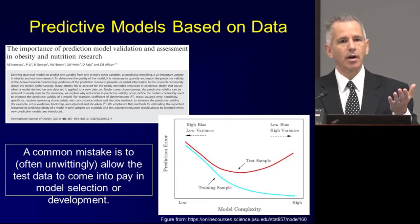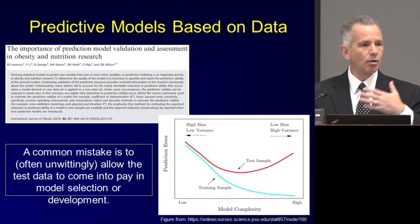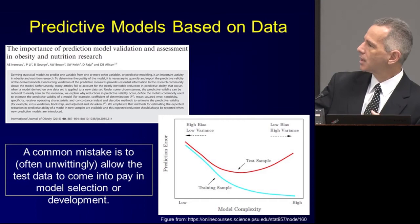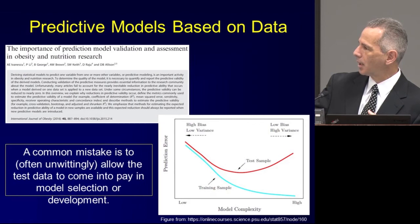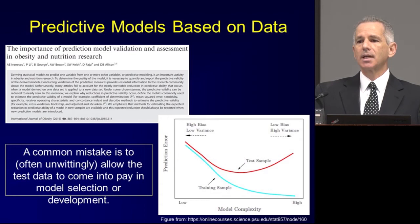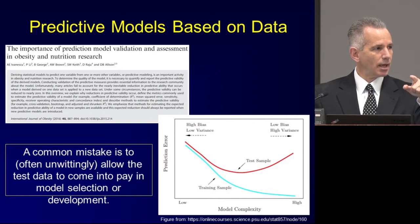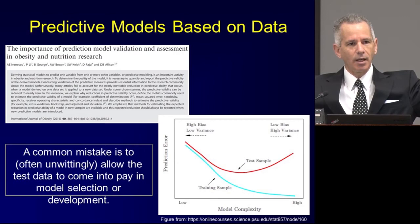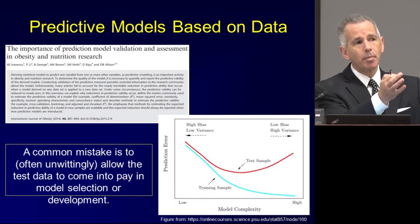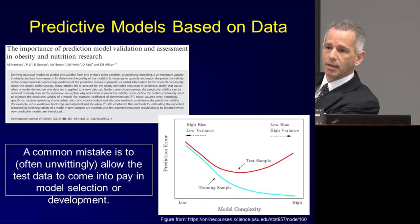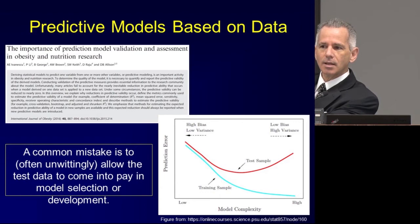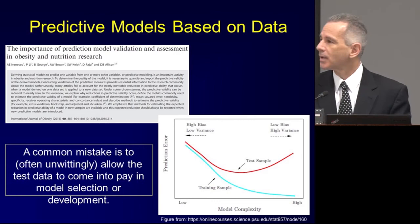A common mistake I see all the time — even in groups at UAB that I work with — is that people inadvertently allow the test data to come into play in model selection or development. For example, people take the whole dataset, look through it, and say 'these 10 variables look like good predictors.' Then they split the dataset in half into test and training. They take those 10 variables, come up with a regression equation based upon the training data, and then say 'I independently validated in the test data and it looks really good.' But the mistake is that they used the test data to pick those 10 variables in the first place — it's totally invalid. This is a very common mistake.